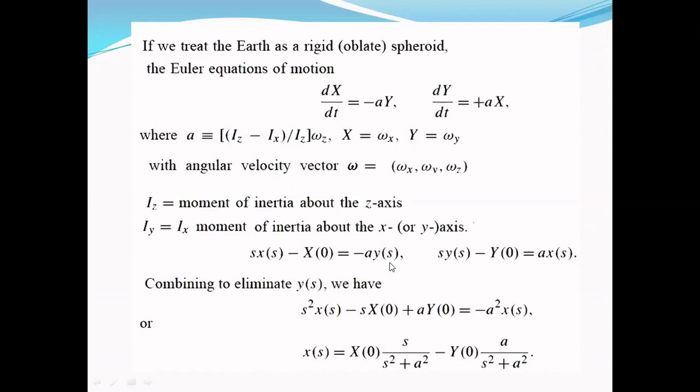Therefore, our first equation changes to s²X(s) - sX(0) + aY(0) = -a²X(s).